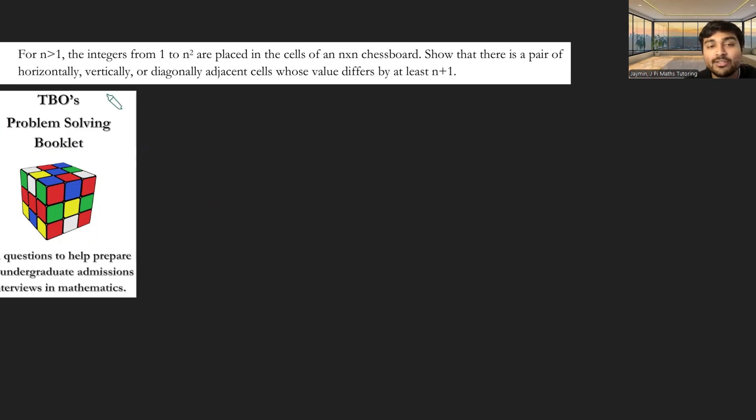For n bigger than 1, the integers from 1 to n squared are placed in the cells of an n by n chessboard. Show that there is a pair of horizontally, vertically or diagonally adjacent cells whose values differ by at least n plus 1.